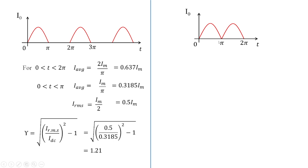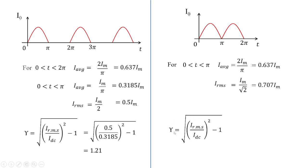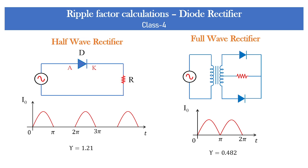For a full wave rectifier, the average value is 0.637·I_M and the RMS value is I_M/√2 = 0.707·I_M. Substituting these into the standard ripple factor formula gives a value of 0.482. Initially I told you that the waveform should be ripple free — the full wave rectifier has a ripple factor of 0.482 and the half wave rectifier has 1.21. Therefore, you would choose the full wave rectifier for practical applications because it has less ripple.